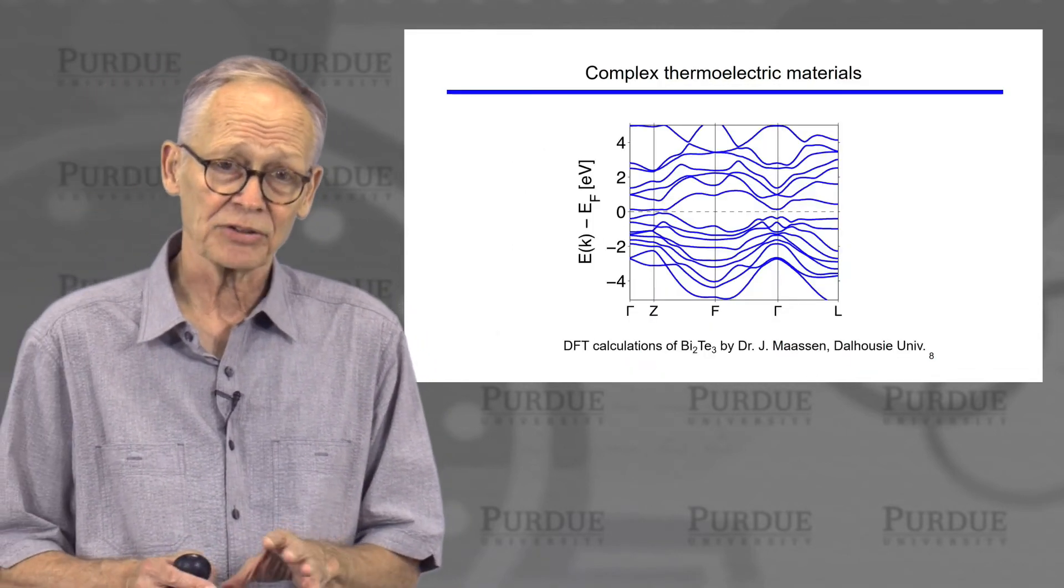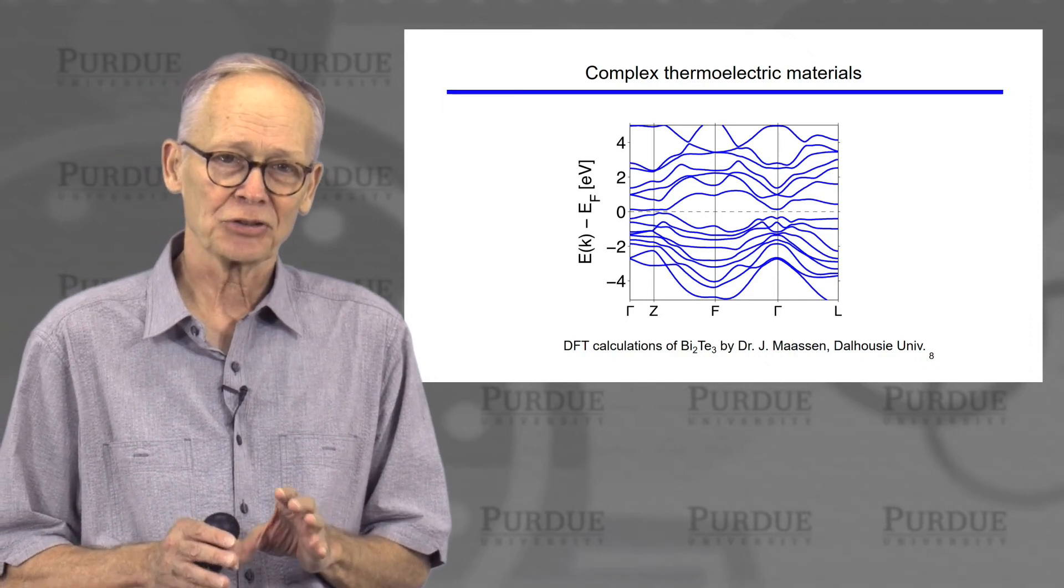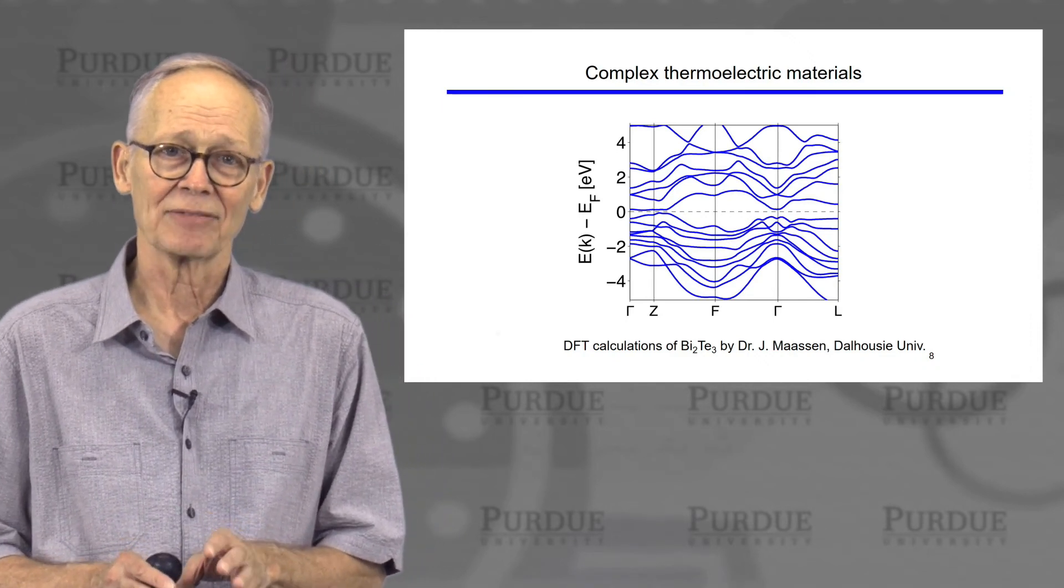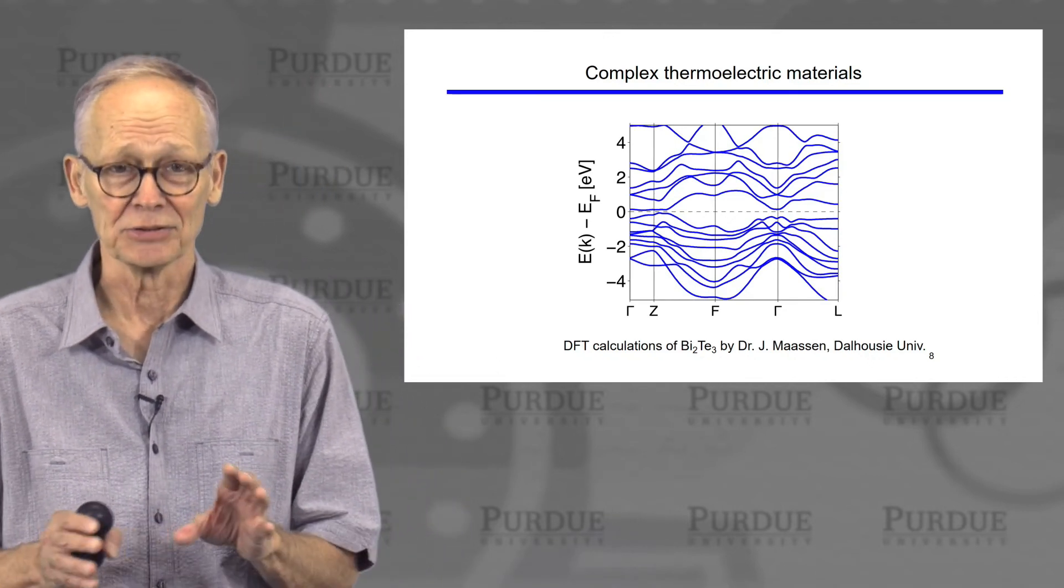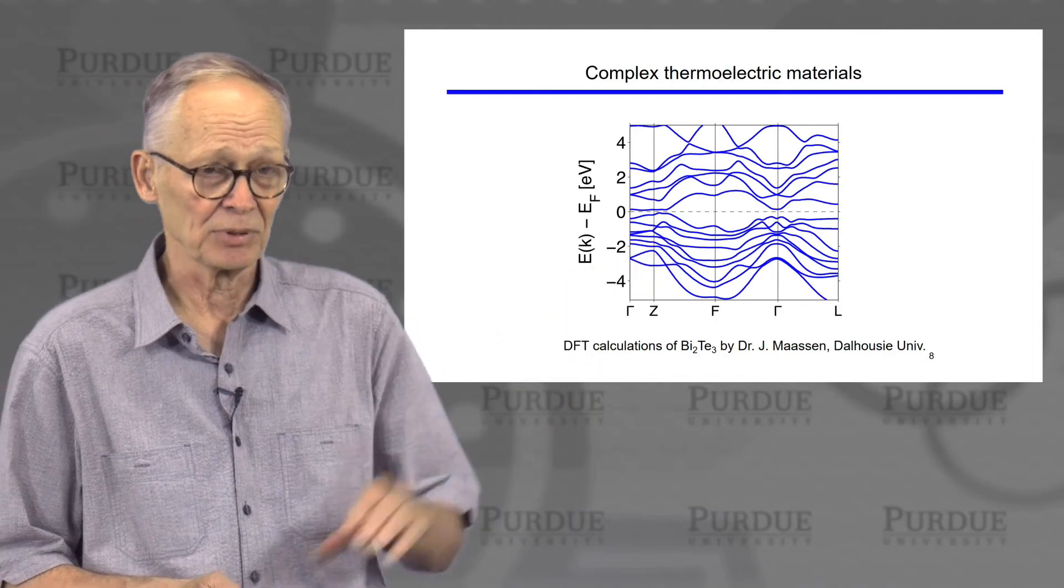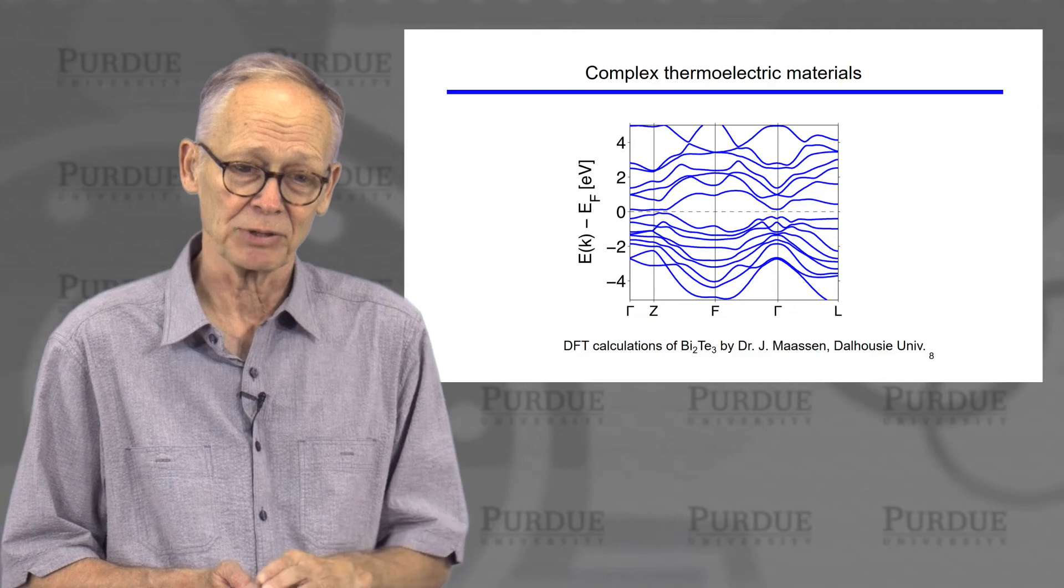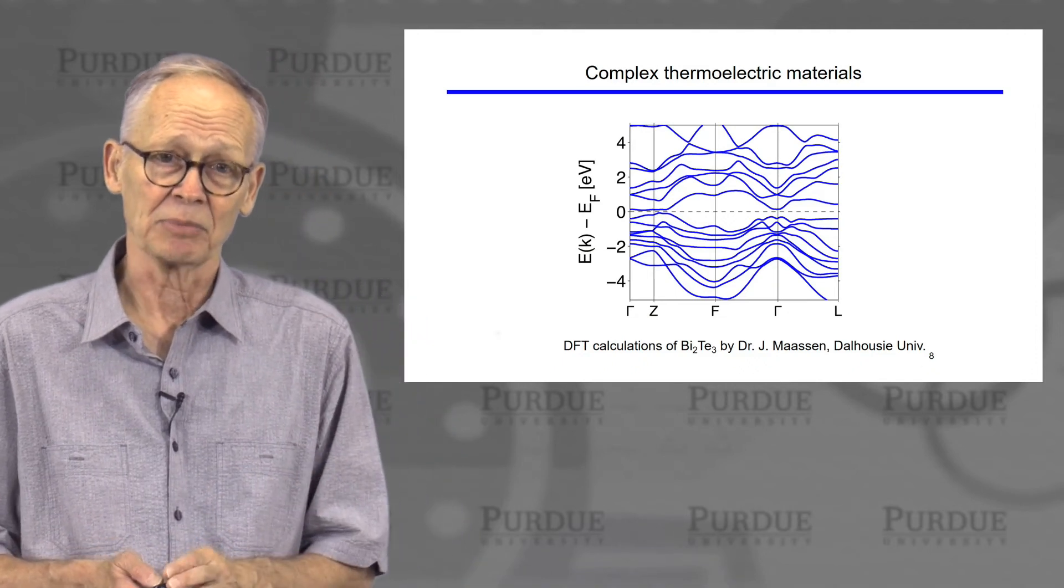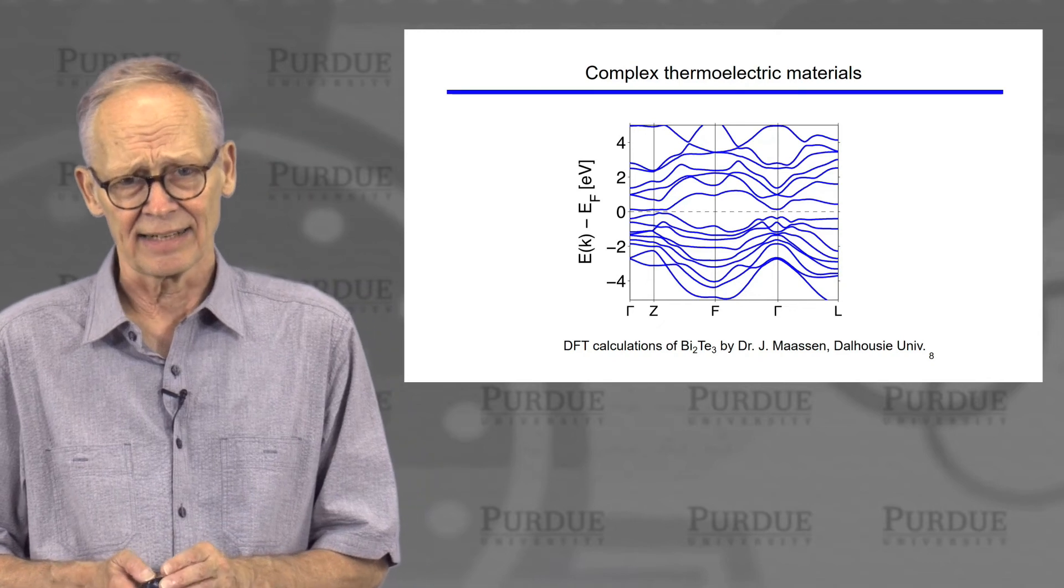Now, one of the other things that makes thermoelectrics complicated is that high-performance thermoelectric materials tend to have complicated band structures and phonon structures. This is an example of the energy band structure of bismuth telluride, one of the standard thermoelectric materials. So that further complicates the analysis because the bands aren't parabolic and they can get highly complex.